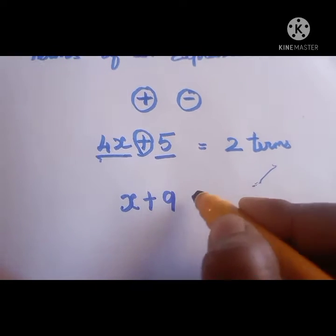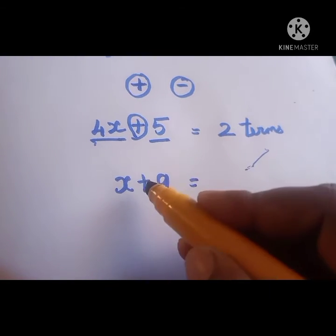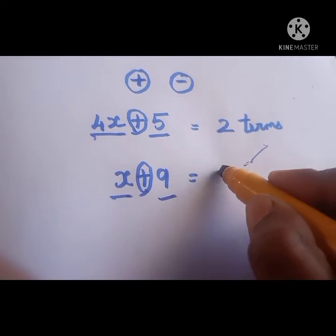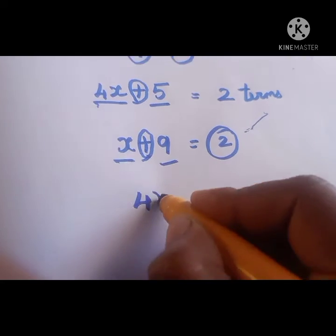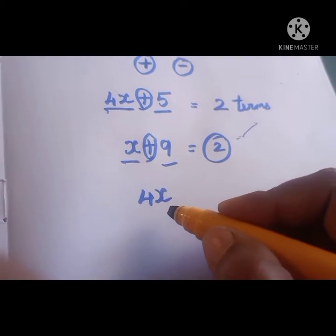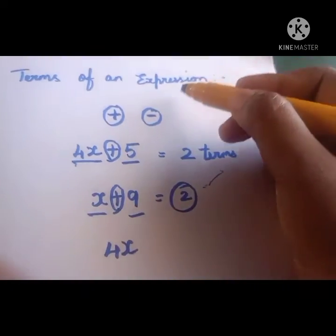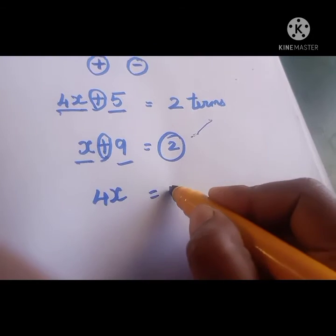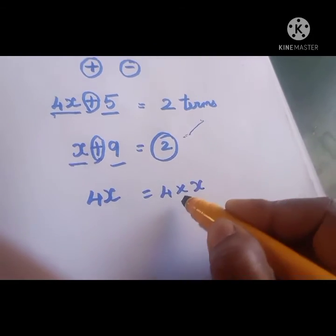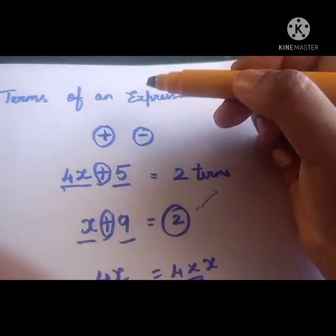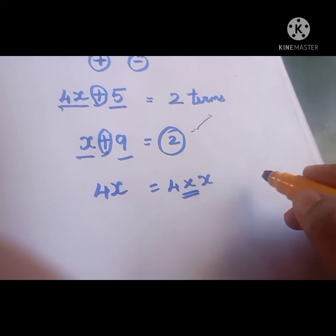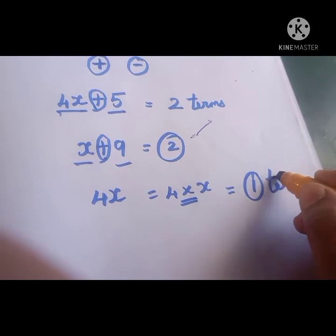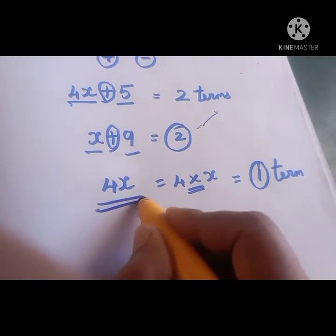In x plus 9, there is a plus sign, so x is 1 term and 9 is 1 term — 2 terms. Now, 4x: check whether plus and minus signs are there — no. 4x means 4 into x, so we should not consider multiplication here. Only plus and minus signs count, so 4x is only 1 term.